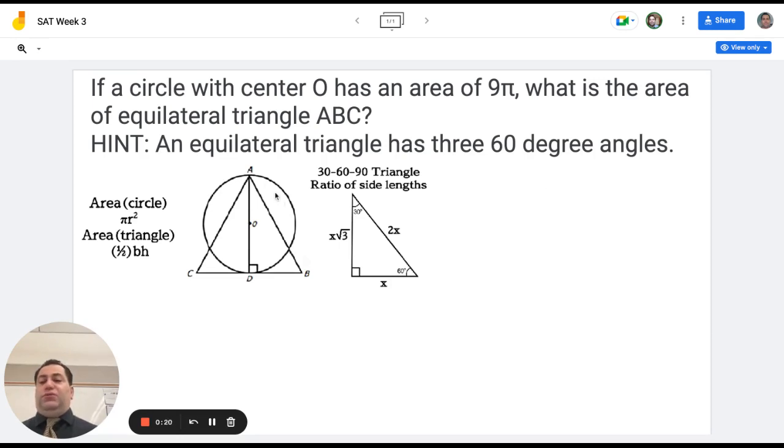So they're referring to this diagram right here, where you have a circle with center O and an equilateral triangle ABC. They go on to give you a hint. The hint is that an equilateral triangle has three 60 degree angles. On the SAT reference sheet, there is a bullet point that says all triangles angles add up to 180 degrees. So you would be able to get to this hint even without it being stated.